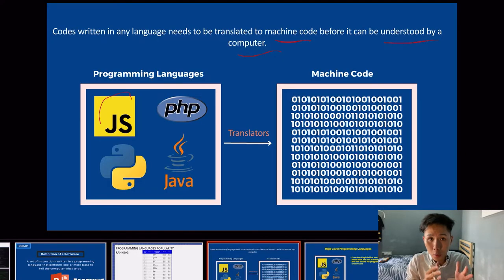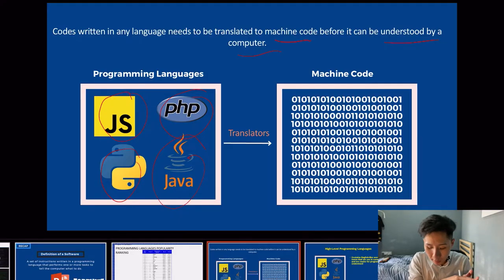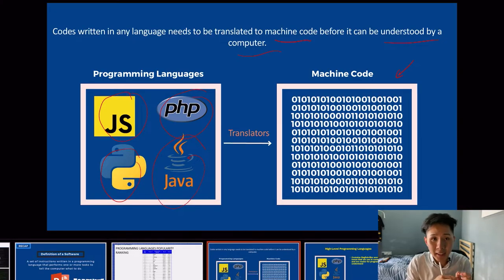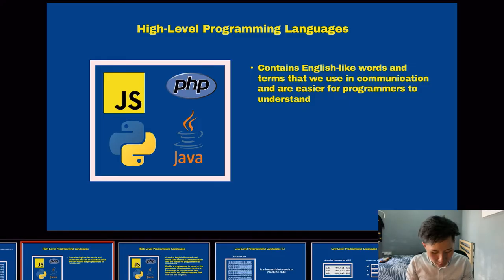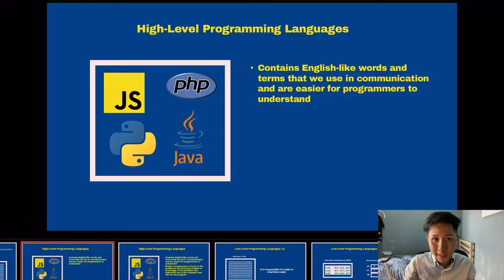Whether you are writing code in JavaScript, PHP, Python, or Java, all these codes will be translated by a translator to machine code for processing. There are mainly two types of programming languages: one is called high level and the other is called low level. Let's first dive deeper into the high level programming language.